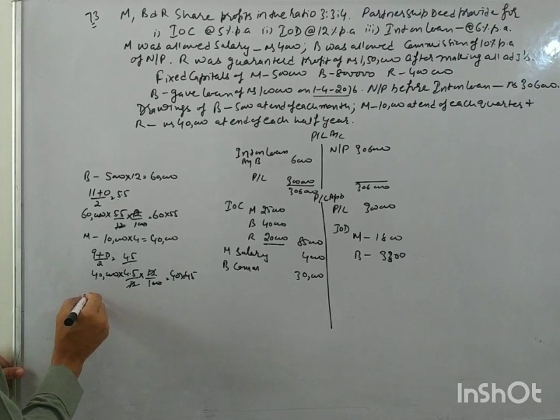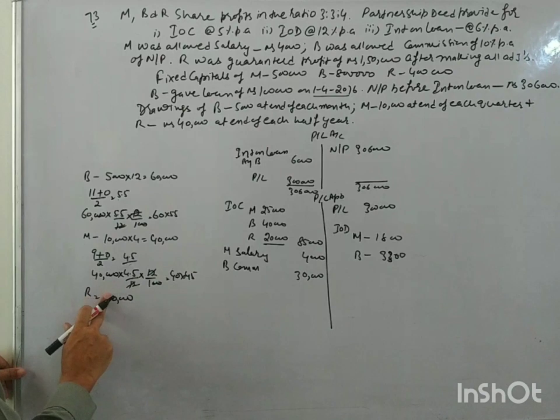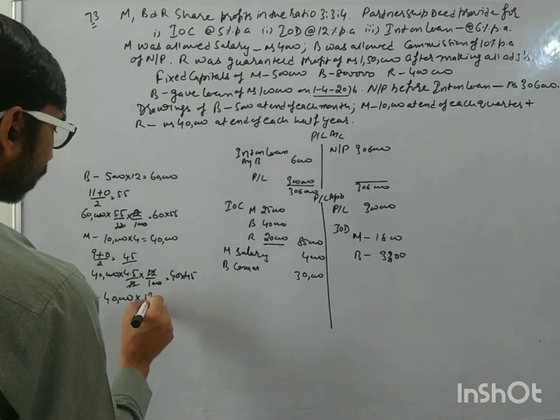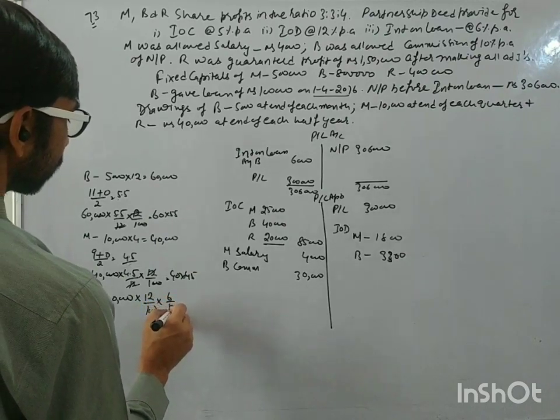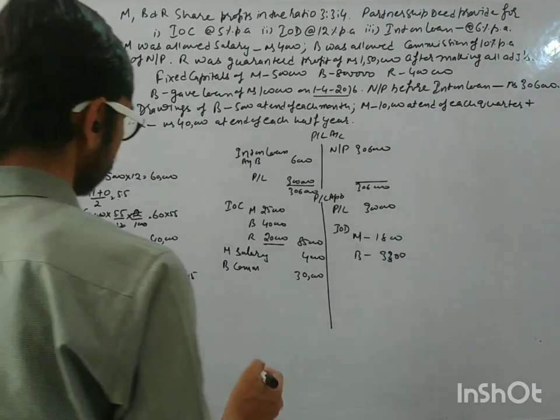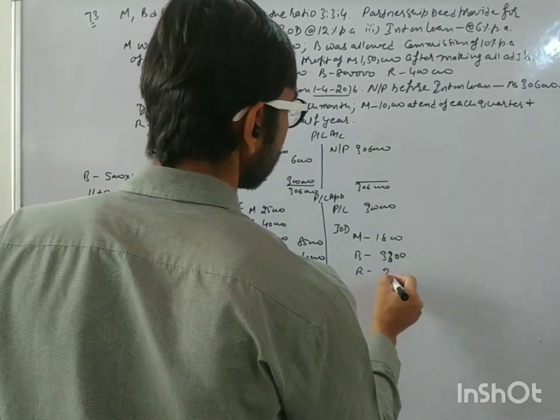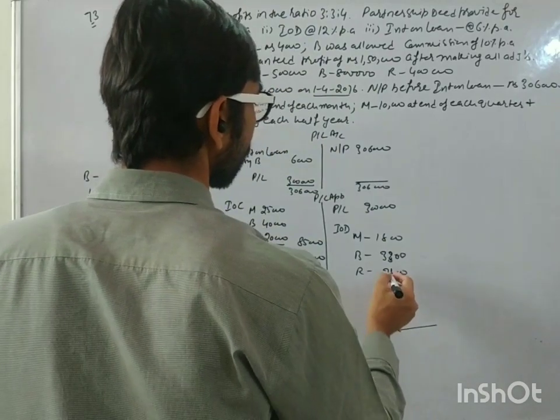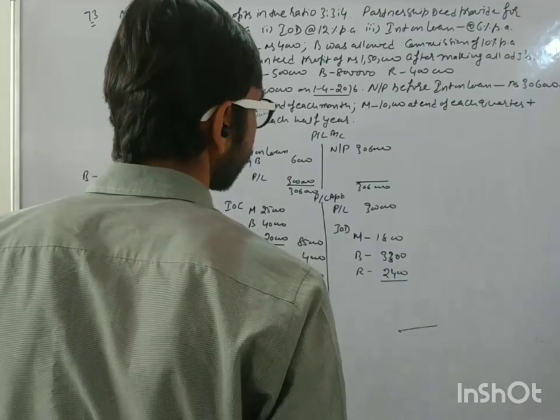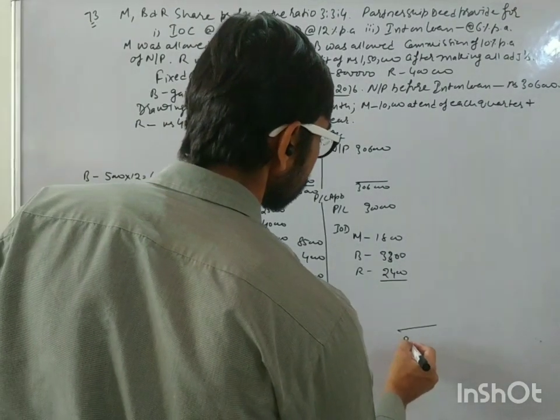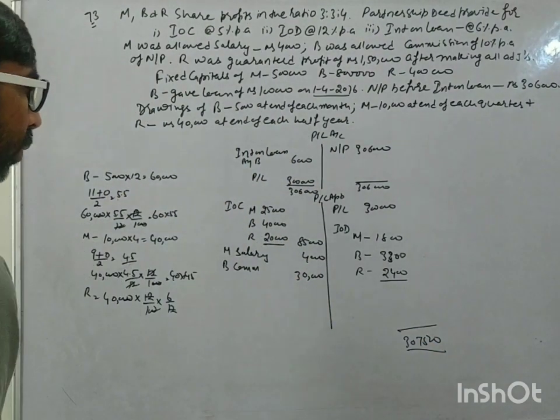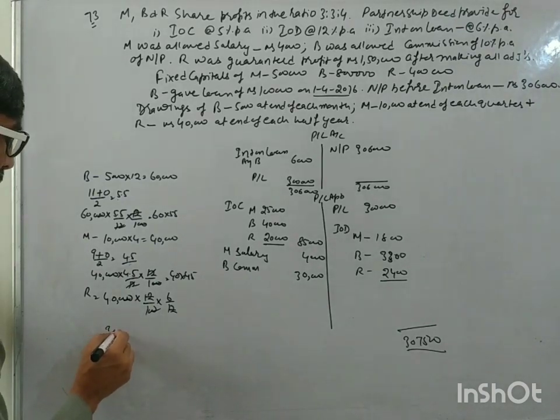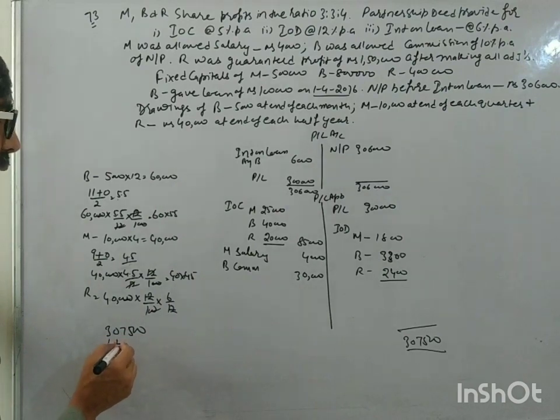Now R. R is withdrawing 40,000 at the end of every half year. So every half year, rate of interest into 6 by 12. Because at the end of half year, how many months are left after that? 6. So R is 2,400. So the total is 1,800 and 3,300 - that's 5,100 - and 2,400 makes 7,500. So 3 lakh 7,500. So here it is, 85 plus 4 is 89, and 30 makes 1,19,000. So 3,07,500.